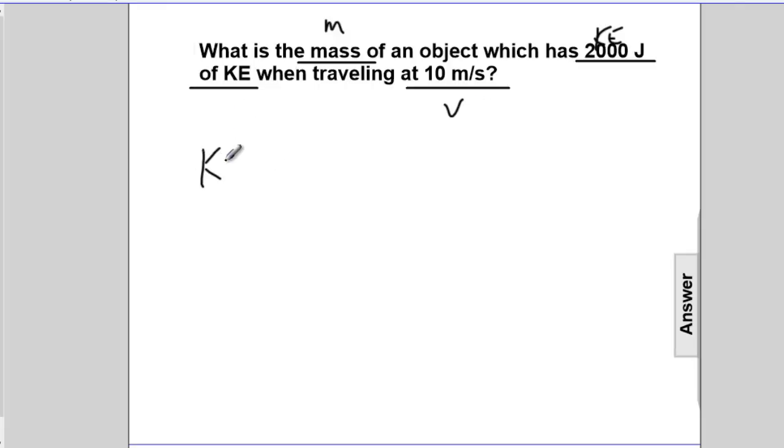By definition, the KE is ½mv². So we're going to isolate this formula and we'll solve for mass.